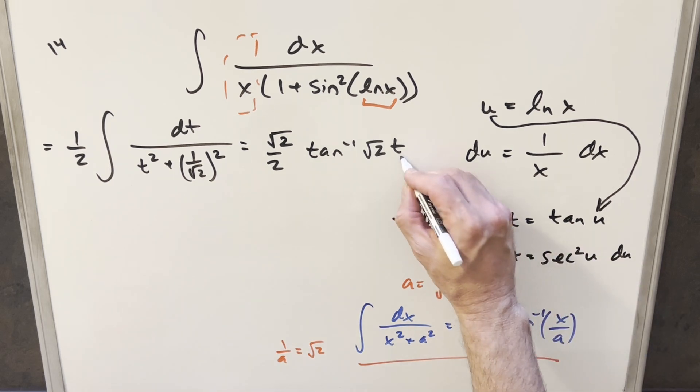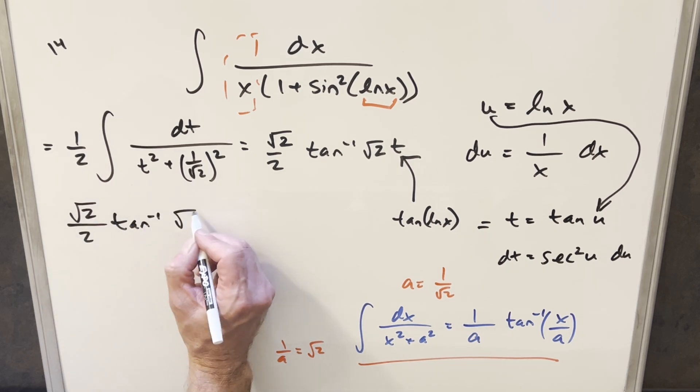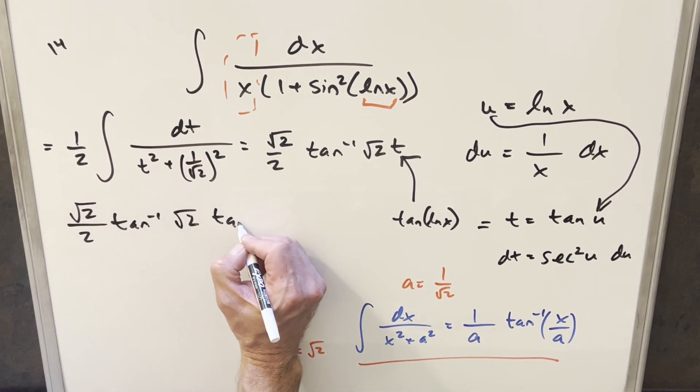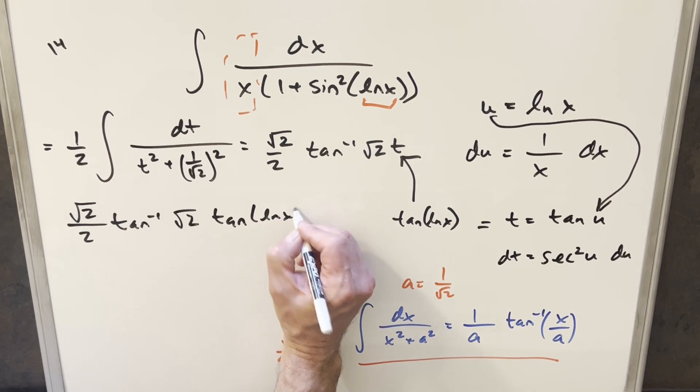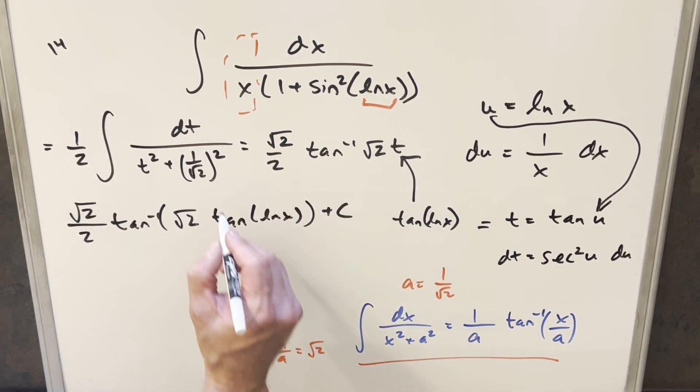And so now we can just plug in for our t value in order to finish this off. So for my final solution to this, we just have square root of 2 over 2, arctan, square root of 2, tan, natural log x, put parentheses, add a plus c, and that's it.